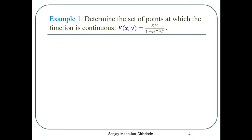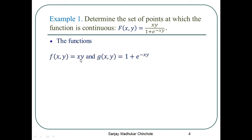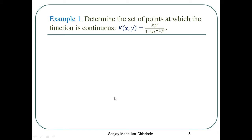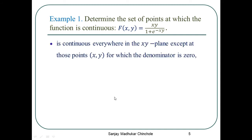Example 1: Determine the set of points at which the function is continuous. The function is given to be f(x,y) = xy / (1 + e^(-xy)). The function f(x,y) = xy and the function g(x,y) = 1 + e^(-xy) are both continuous everywhere in the xy-plane. So the given function f(x,y) = xy / (1 + e^(-xy)) is also continuous everywhere in R² except at those points where the denominator is 0.